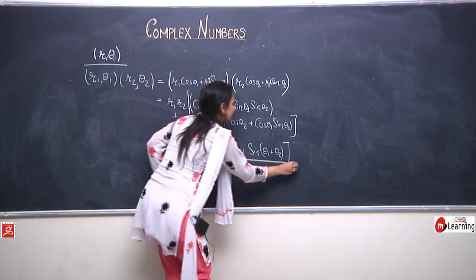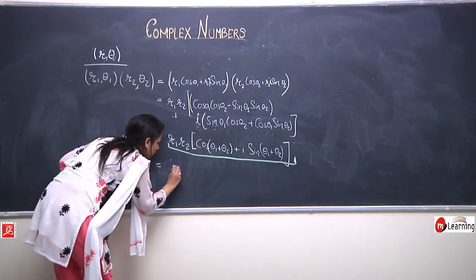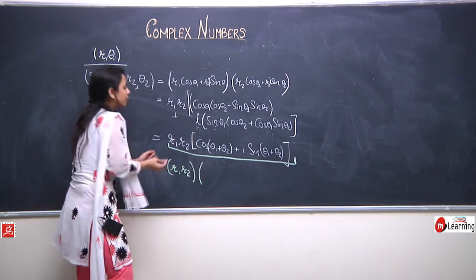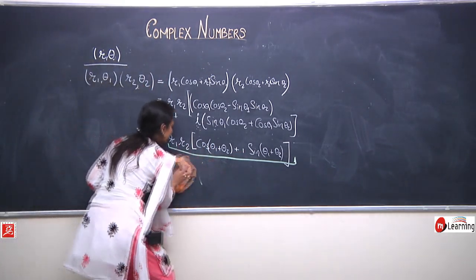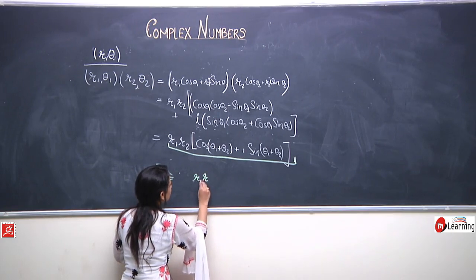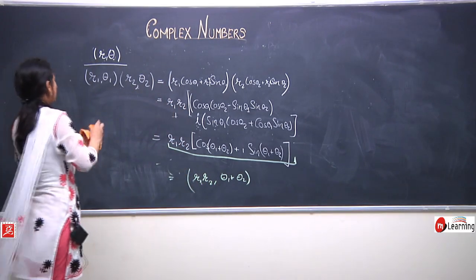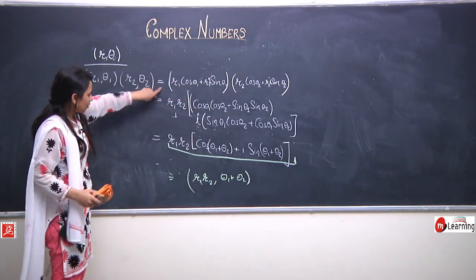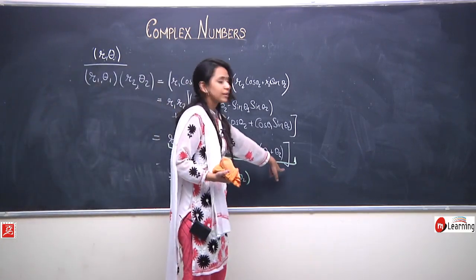Something very interesting here. In polar coordinates, this complex number represents one whose modulus is r1 r2 and whose argument is theta1 plus theta2. So in terms of polar coordinates, we can write this product as the ordered pair r1 r2 comma theta1 plus theta2. We multiplied r1(cos theta1 plus iota sin theta1) and r2(cos theta2 plus iota sin theta2), and found the result is r1 r2 into cos(theta1 plus theta2) plus iota sin(theta1 plus theta2).